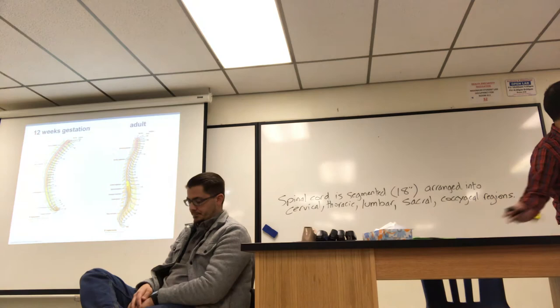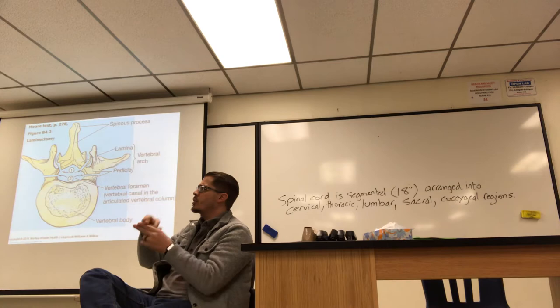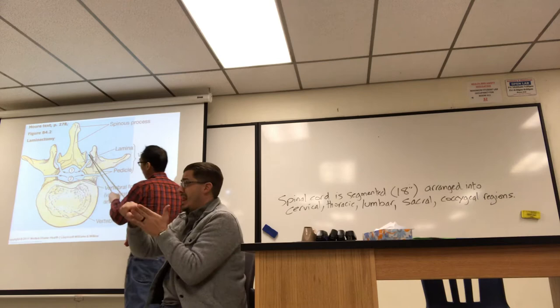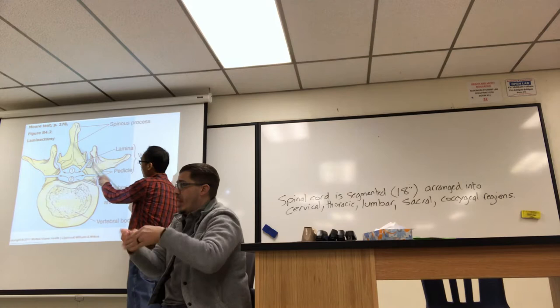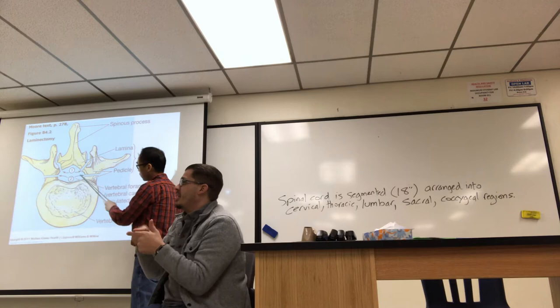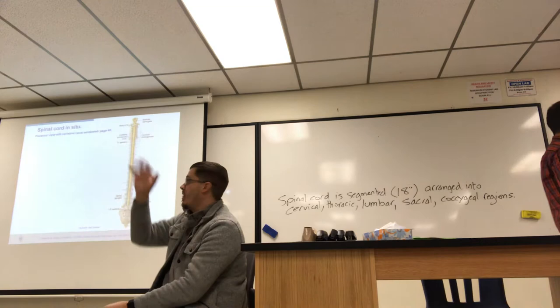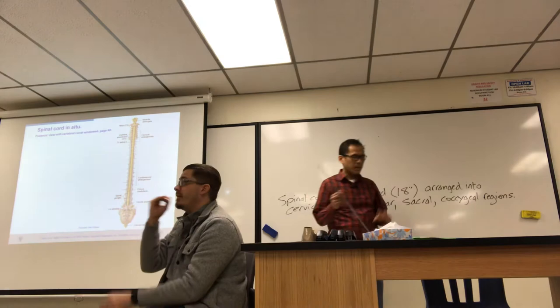To view the spinal cord inside the vertebral column, a laminectomy is performed. The lamina is part of the neural arch. You use a hammer and chisel to gnaw away at the plate-like lamina on one side, then use it as a lever to pull it off gently. That gives you a full view inside so you can view the spinal cord along its entire length.